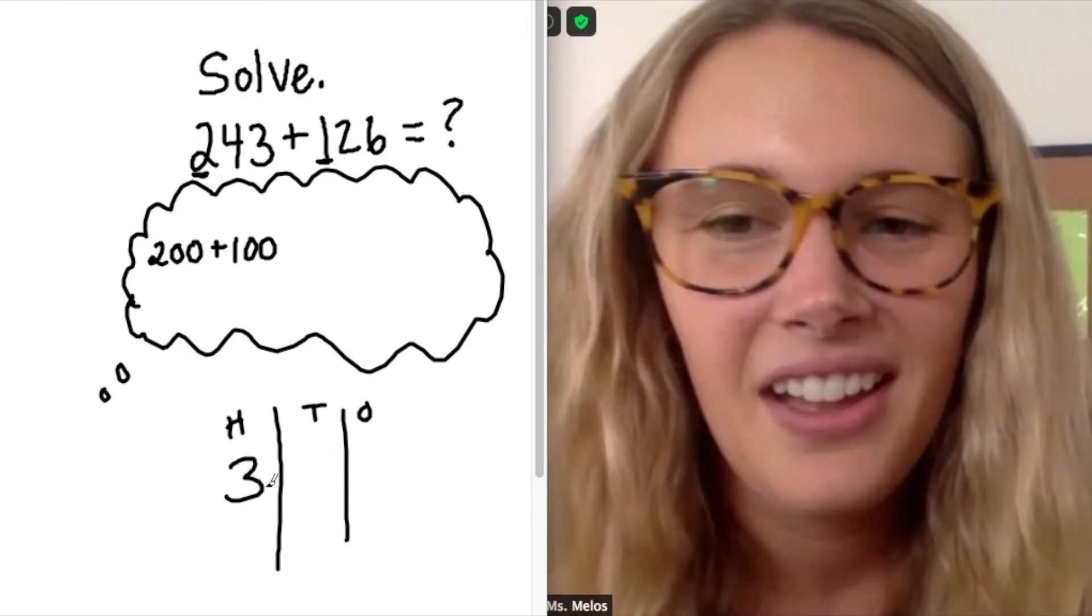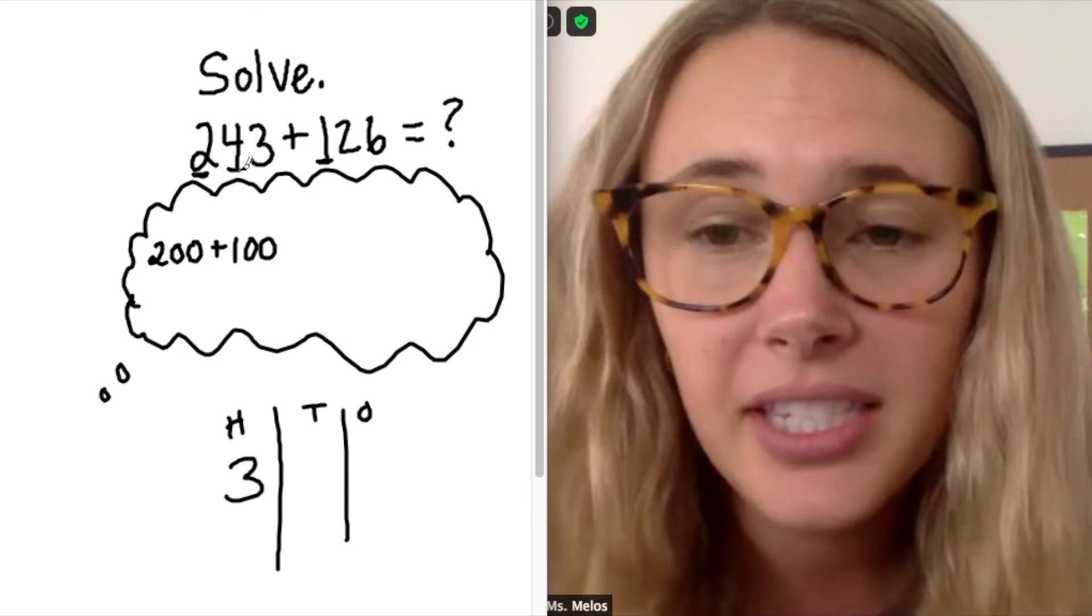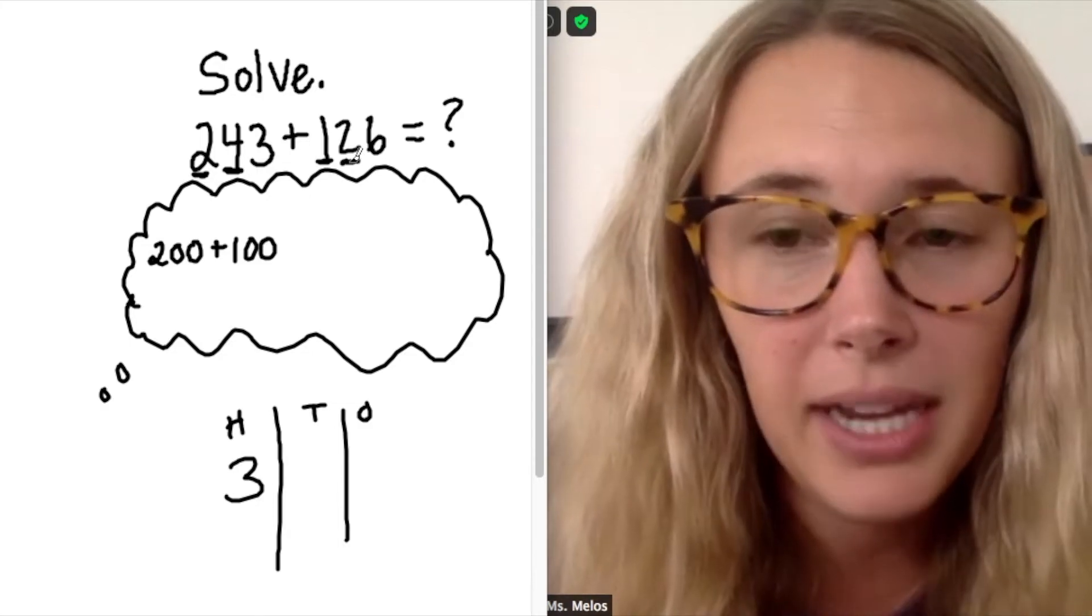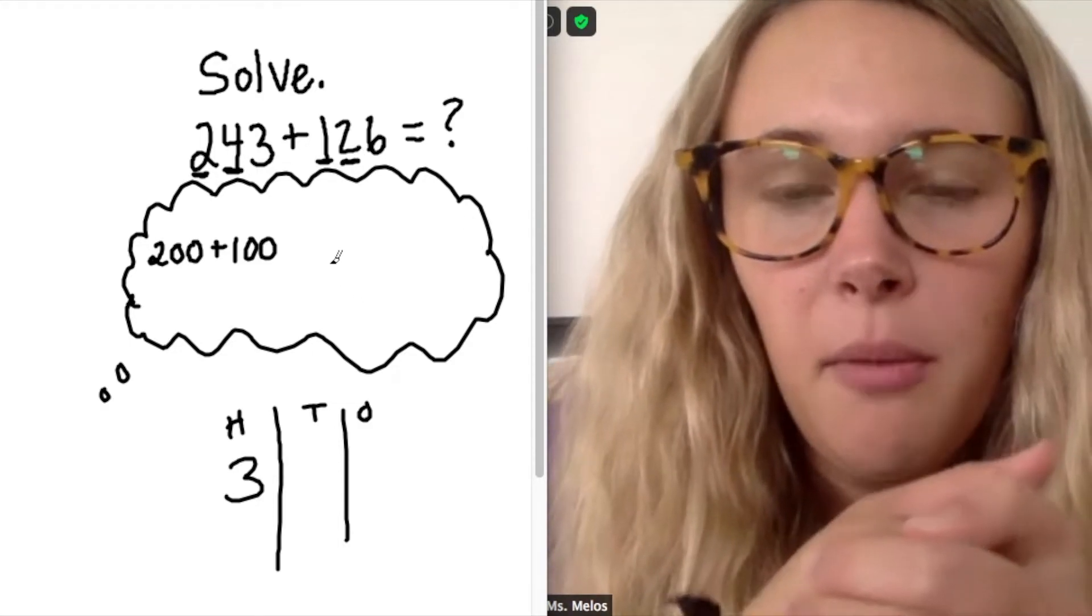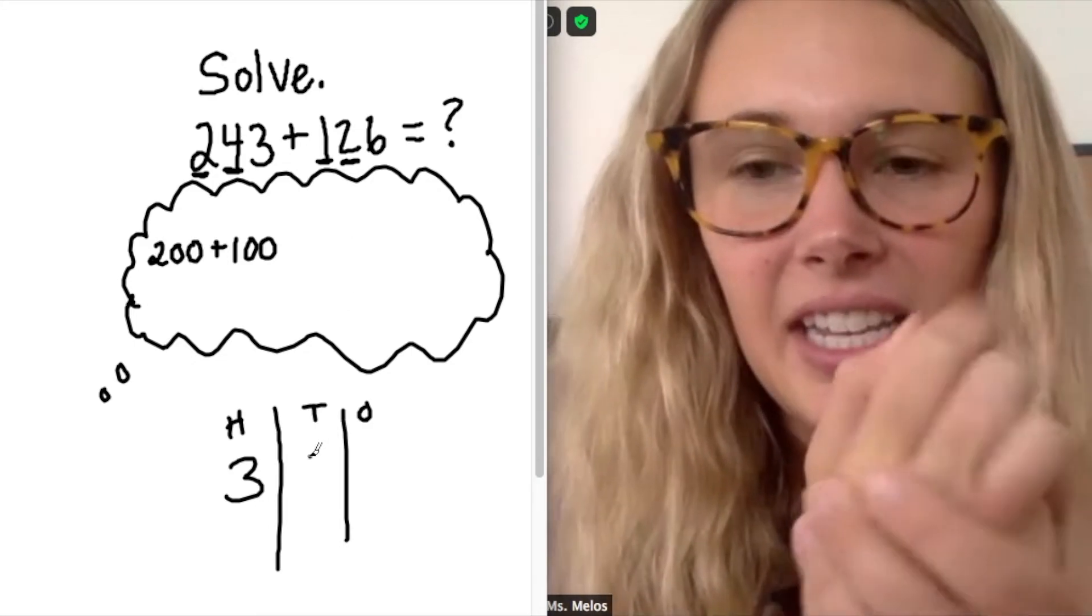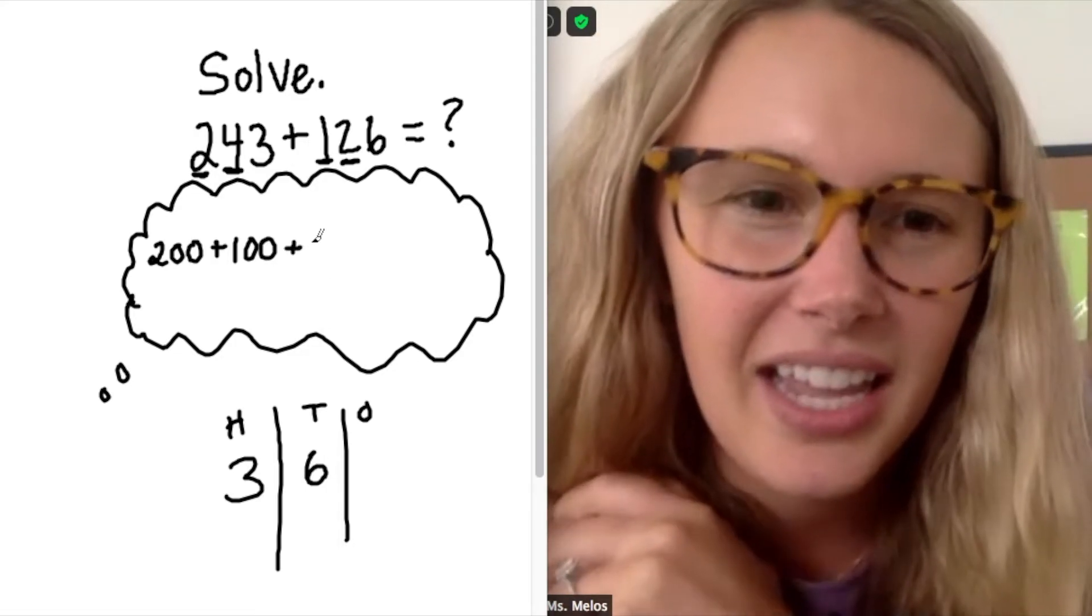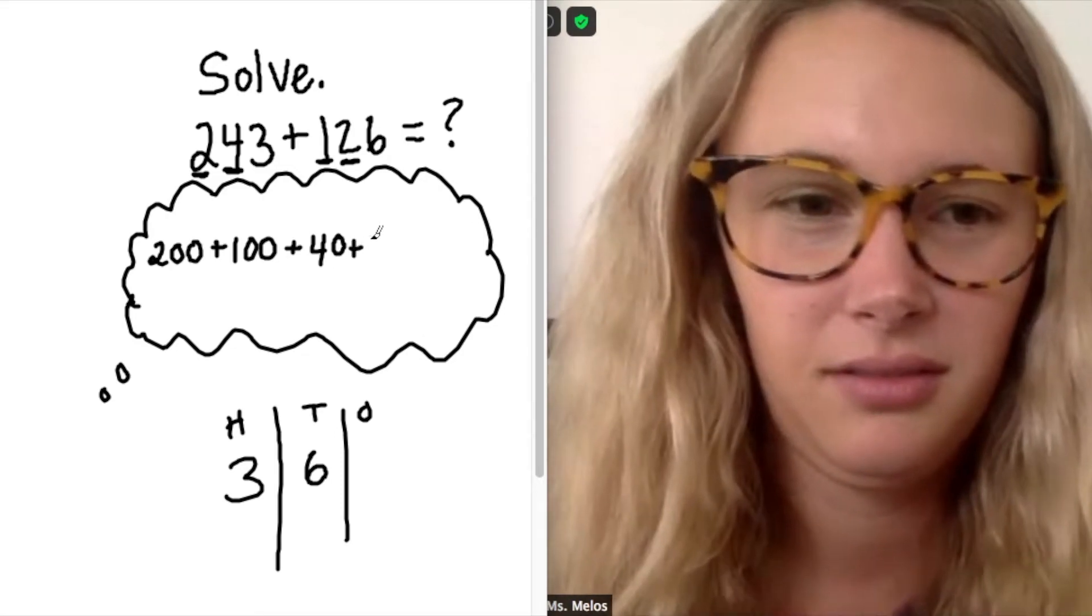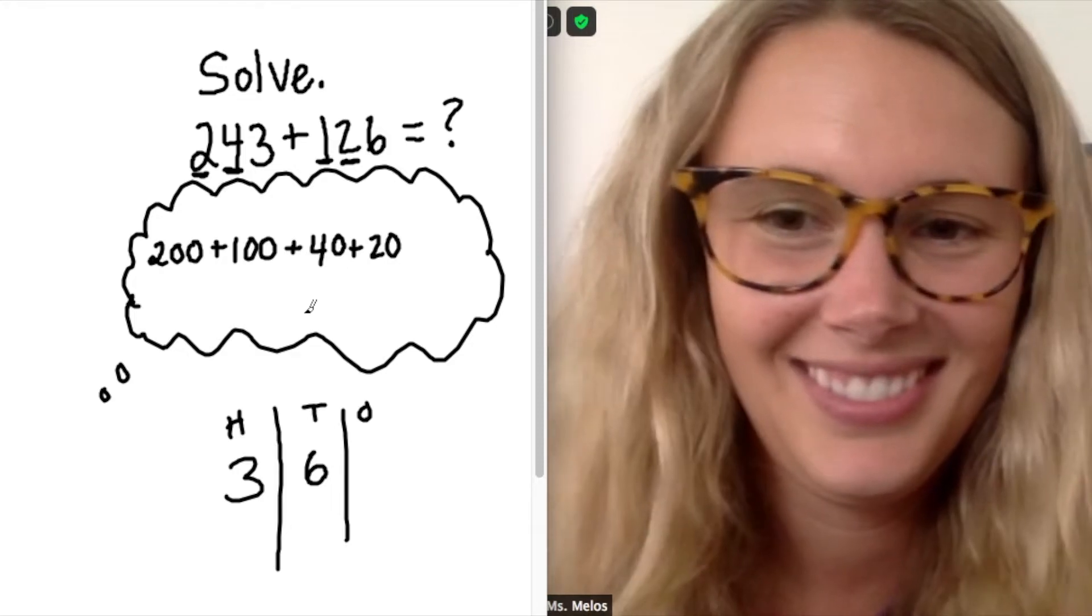Got it. All right. So now my next place is my 10s place. So I see I have a 4 in my 10s place and a 2 in my 10s place. So if I do 4 plus 2, 5, 6, then I have a 6 in my 10s place. So it's kind of like doing 40 plus 20 gives me 60, and that 6 goes in my 10s place. Let me write that down. So you did 40 plus 20, 60 with the 6. Perfect.